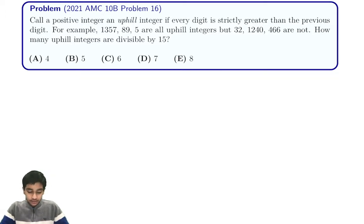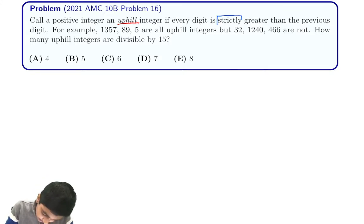Call a positive integer an uphill integer - so like you're going up a hill. Basically every digit is, be careful of the wording here, strictly greater, strictly meaning it cannot be equal, has to be strictly greater than the previous digit.